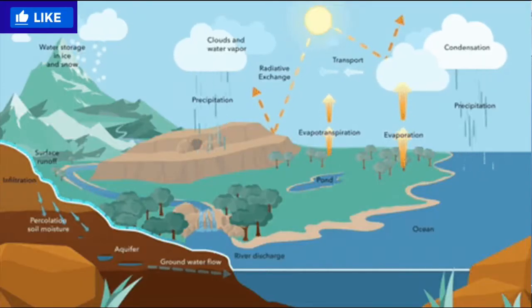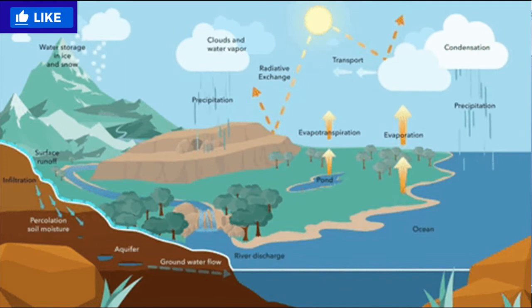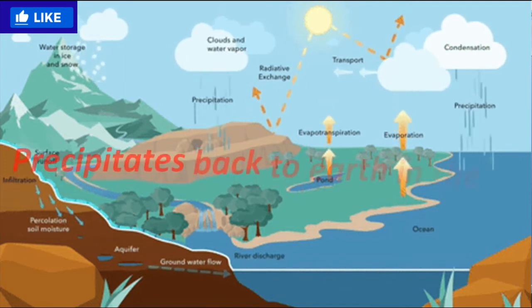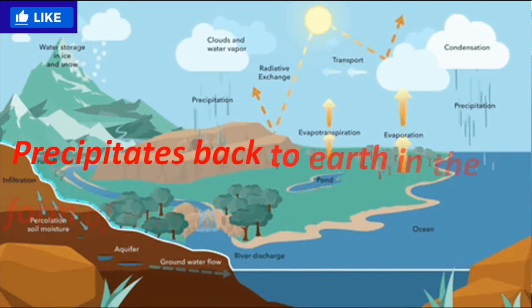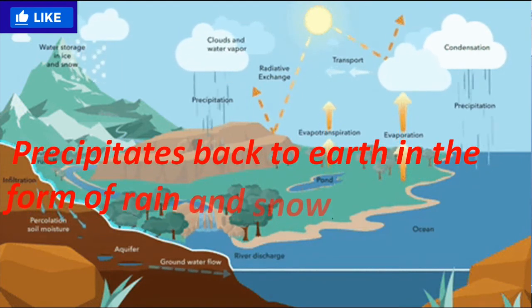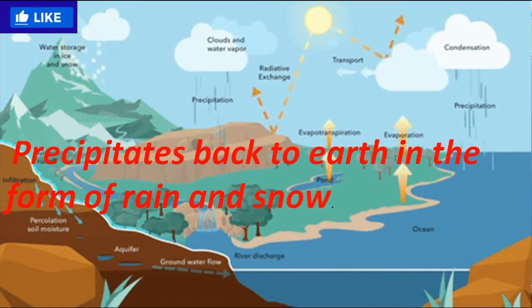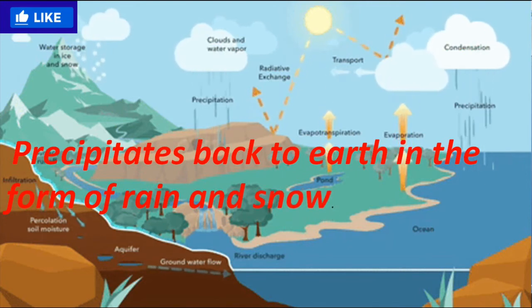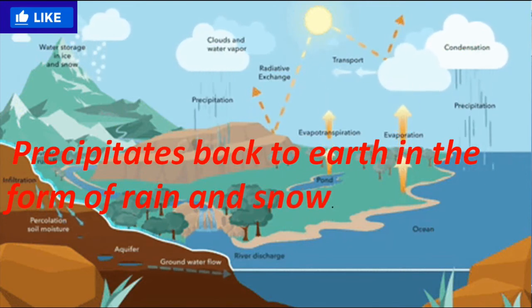Clouds get cooled down and precipitation occurs. The water precipitates back to the earth in the form of rain and snow.